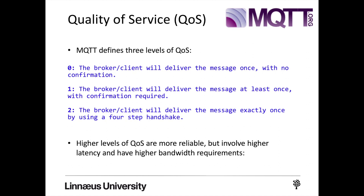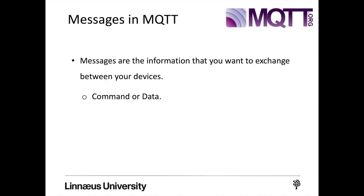At the highest level of Quality of Service, level two, the broker or client will deliver the message exactly once, but there is a more thorough process involving a four-step handshake to authenticate each other. Messages are the information you want to exchange between your devices — it can be a command or data itself.